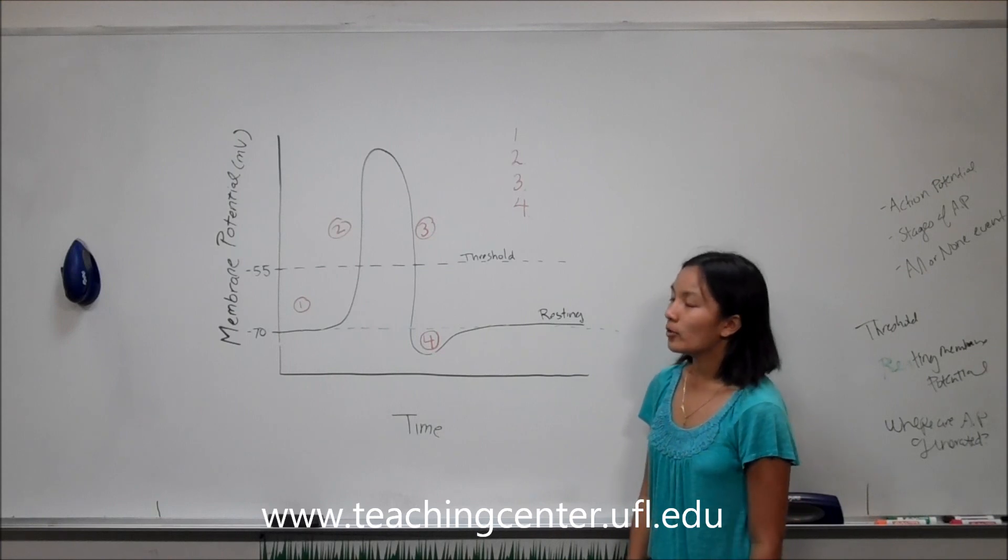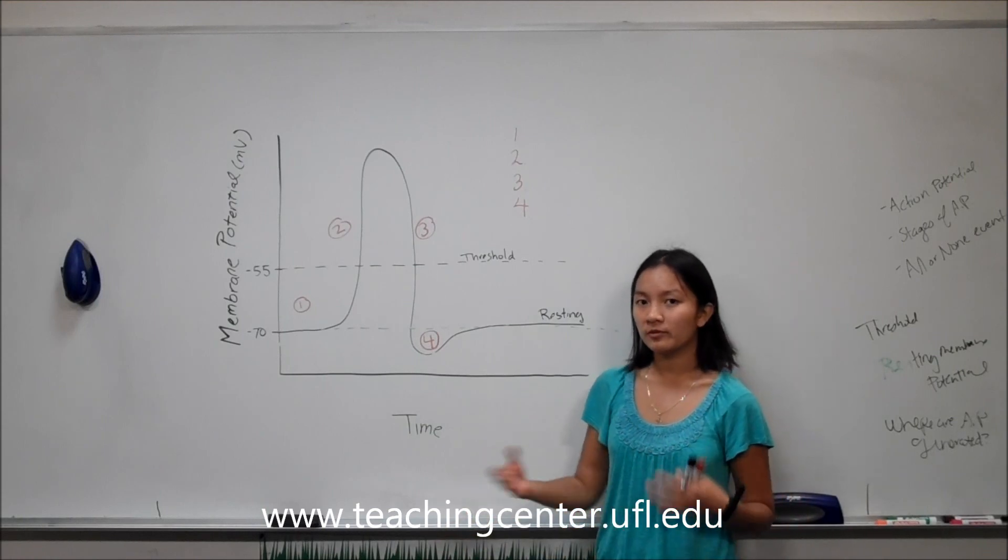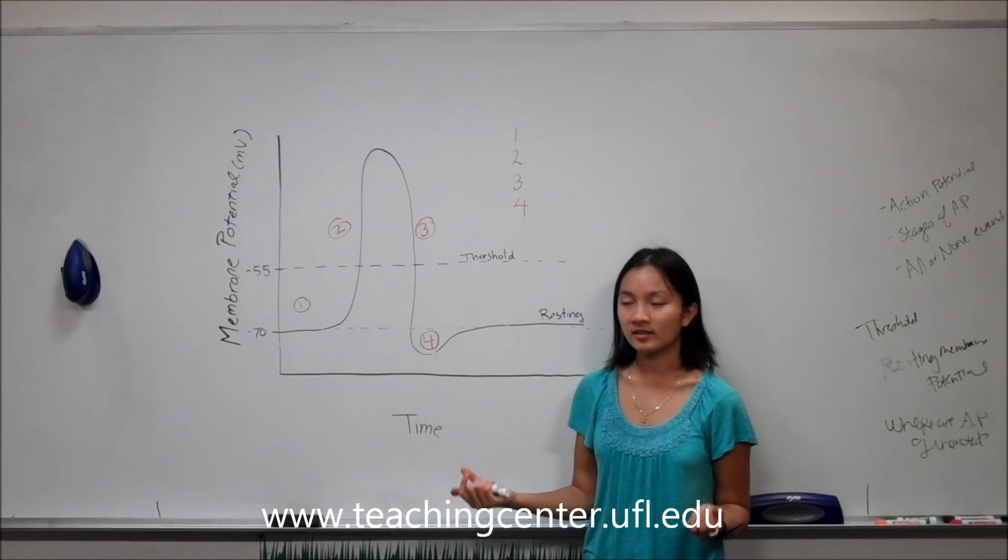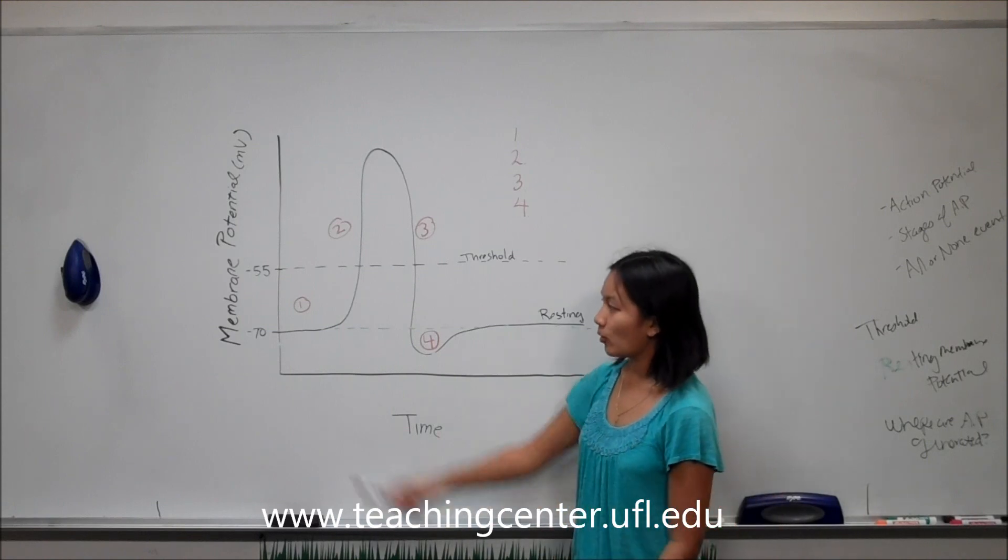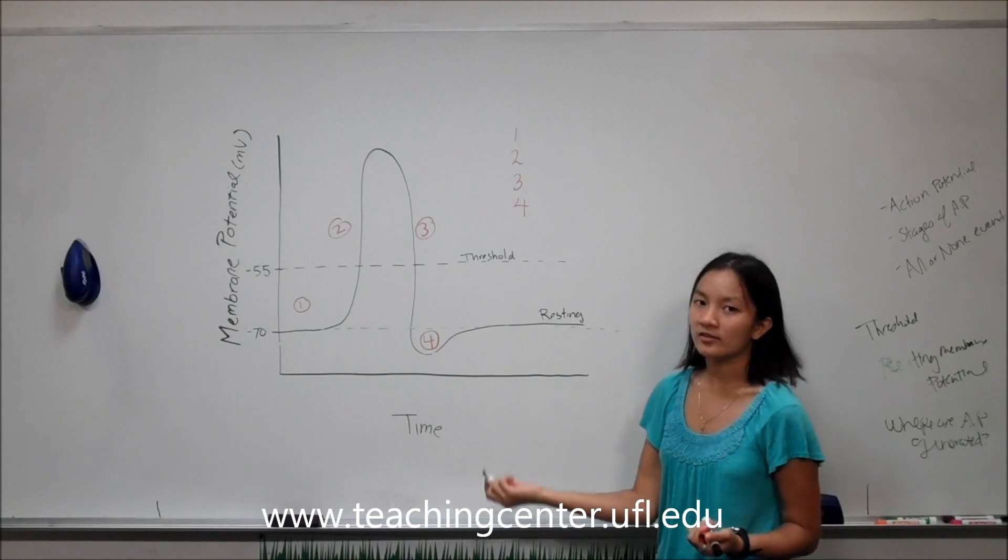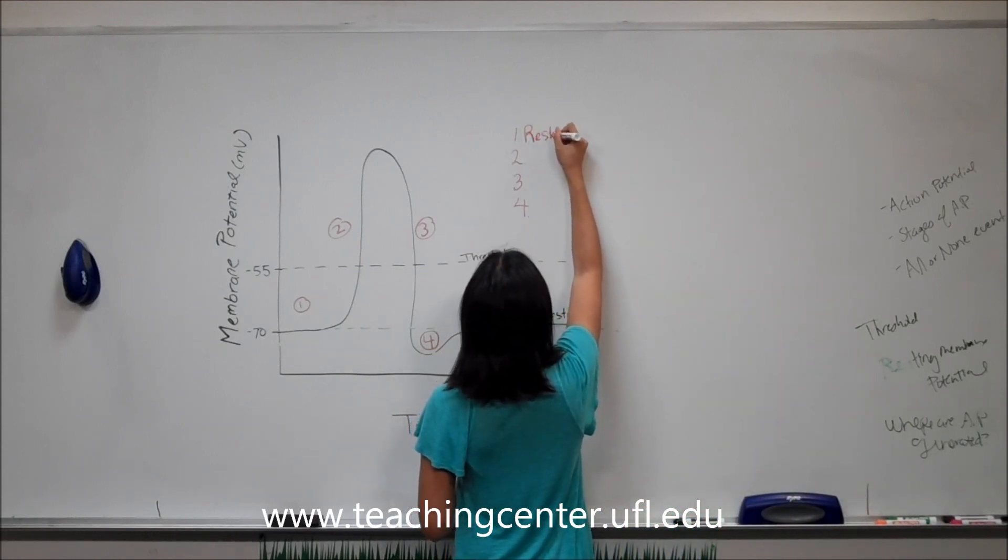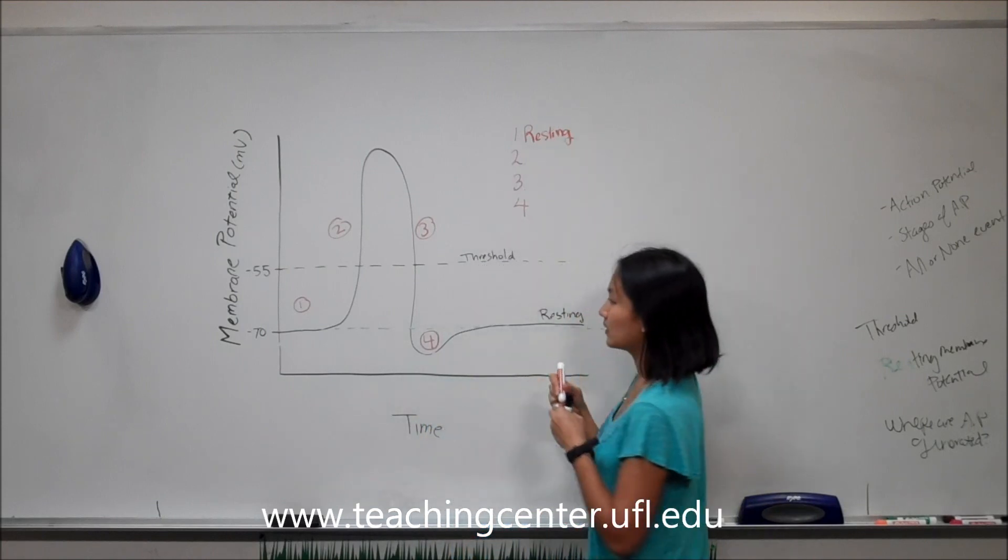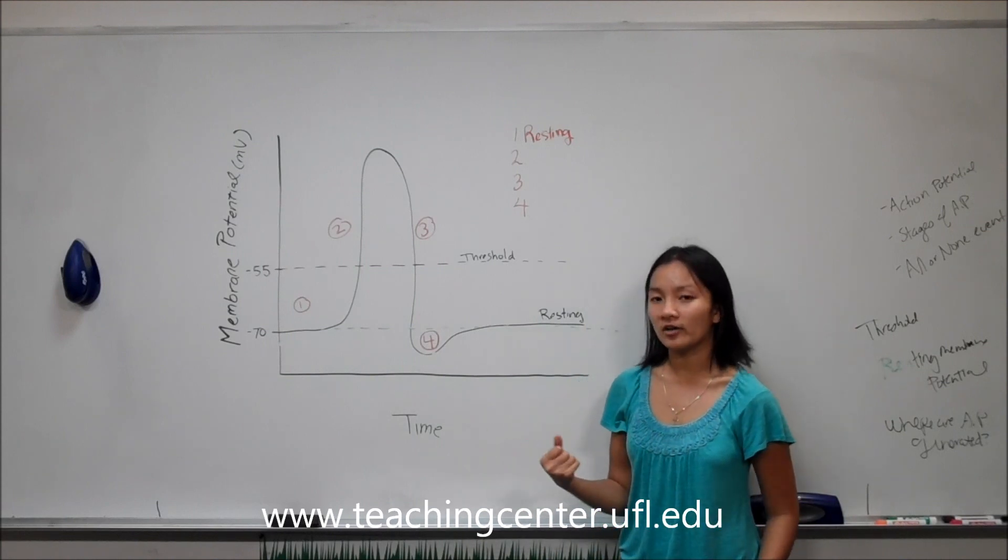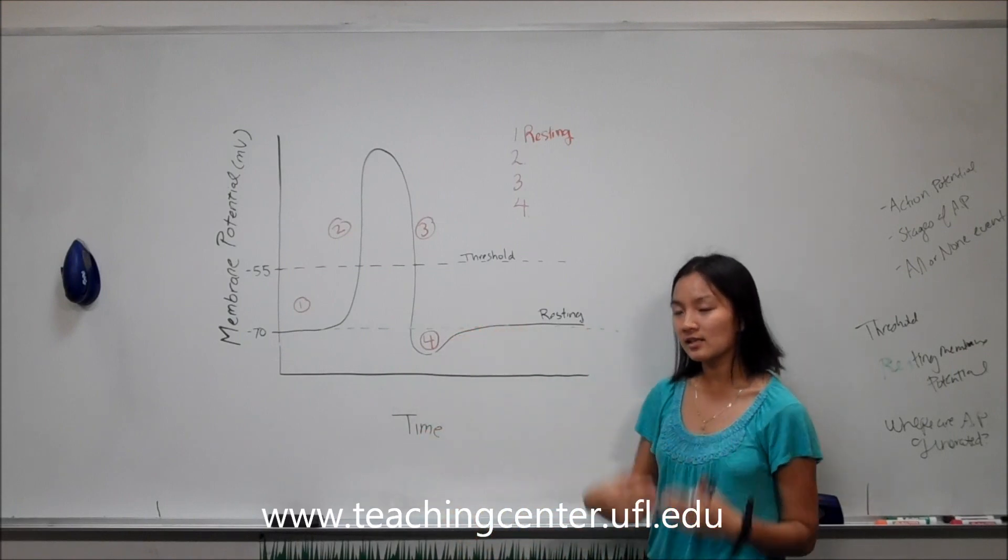So now we'll be going over the different stages of how you generate an action potential. We'll be reviewing those different membrane channels and pores that we talked about in the last video. So stage one, you have your membrane potential at resting, negative 70. This is known as resting membrane potential. At stage one, you have your sodium-potassium pump working really hard to keep a lot of sodium ions outside of the cell and a lot of potassium ions inside the cell.